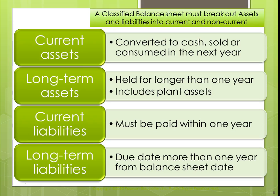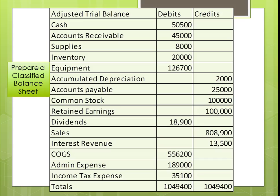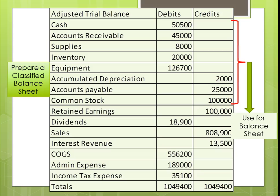Current assets and current liabilities are anything that is going to happen within the next year or the operating cycle, whichever is longer. We like to do that category because another thing we like to do with this information is figure out working capital, which is current assets minus current liabilities. Now we're going to prepare a classified balance sheet. We need all of our assets, all of our liabilities, and our equity accounts, including the ending retained earnings balance from our Statement of Retained Earnings.